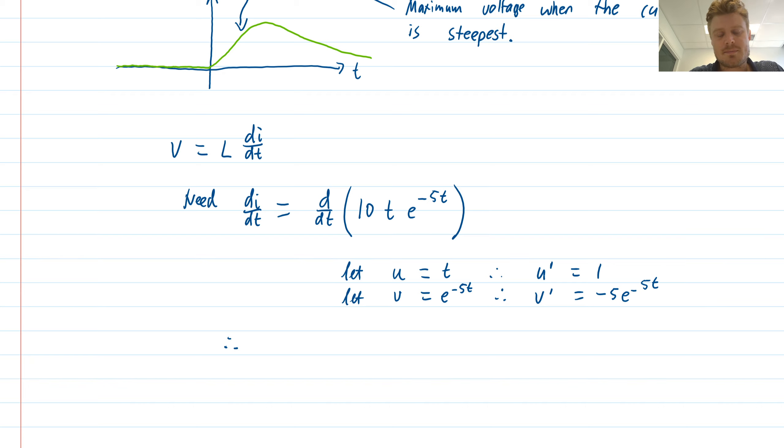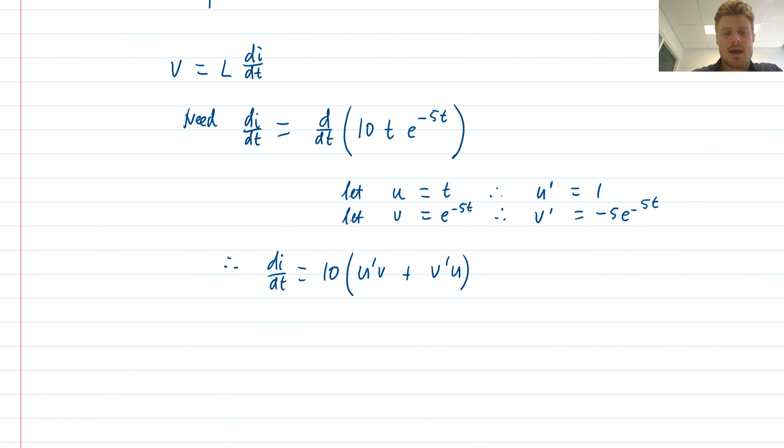According to my product rule, I can write the derivative like this. I'm going to bring the 10 to the front, so I have di/dt is 10 times (u dash v plus v dash u). I can substitute in my values: u dash is just one, v was e to the minus 5t, and then for my second term I have minus 5 e to the minus 5t times u, which is just t.